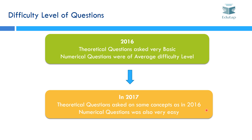Come 2017, again the theoretical questions asked were very easy. It is a very surprising thing that the concepts on which theoretical questions were asked in 2017 were exactly the same concepts as in 2016. In a way, some of the questions asked from the bonds topic in 2016 were repeated in 2017 — like what are zero coupon bonds or what are perpetual bonds. The one numerical in 2017 was also very easy.